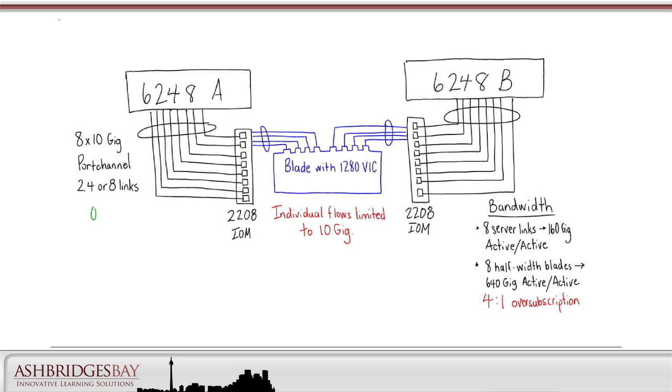And our final question for this section: what happens if one of the server links fails? The answer is traffic flows over the remaining links.